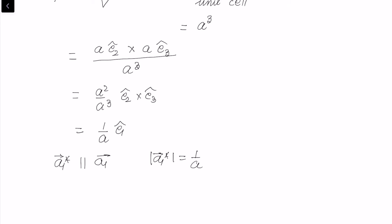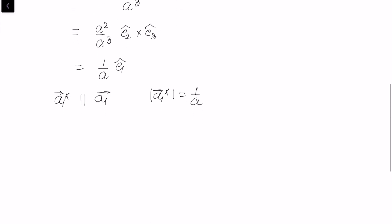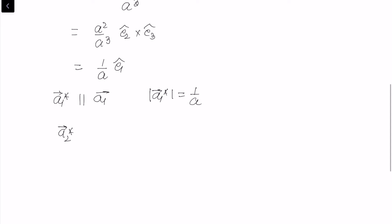Applying similar formulas for a2 star and a3 star, we find that a2 star equals (1/a) e2 and a3 star equals (1/a) e3.